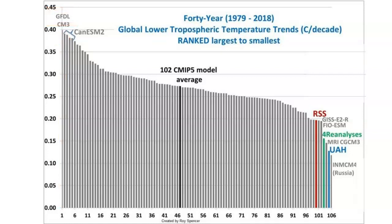So which model was the best? The answer is down here to the right — the Russian model, the IN-MCN model. Now let's see how well the Russian model performed with respect to the other climate models using a time series graph.